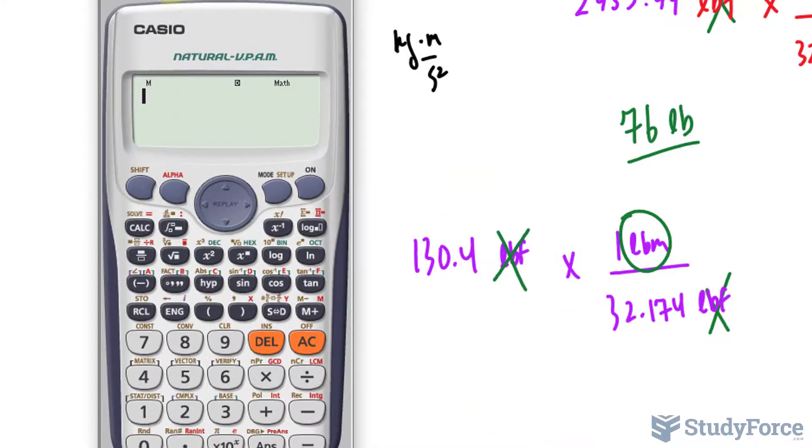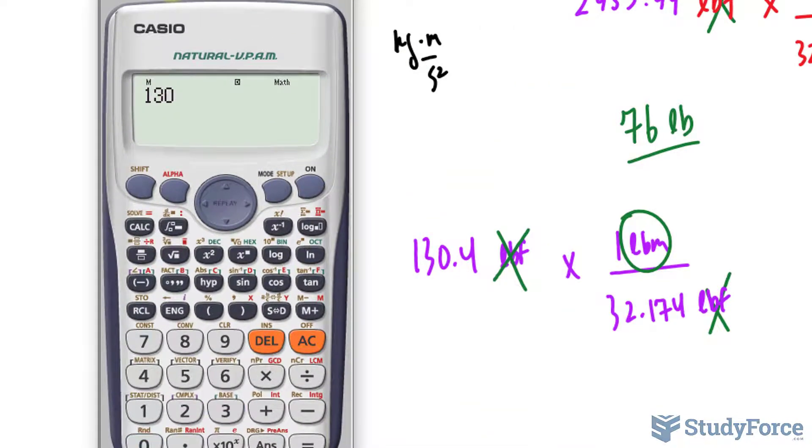Notice that these two units will cancel out leaving us with lbm. I'll use my calculator and by calculating this, I will end up with the amount of pounds, the equivalent pounds.